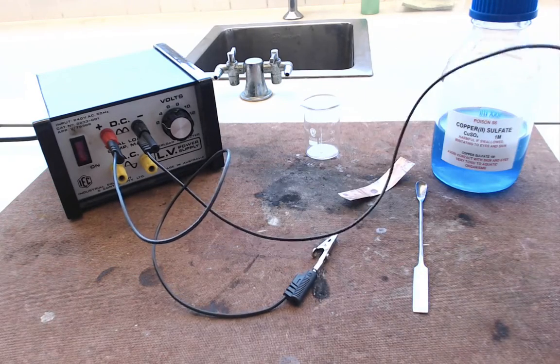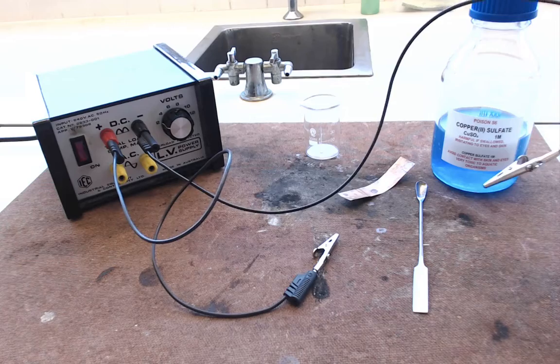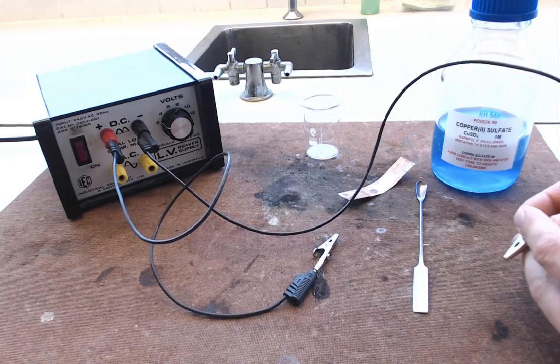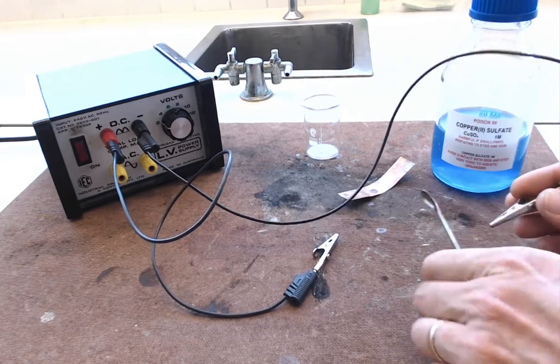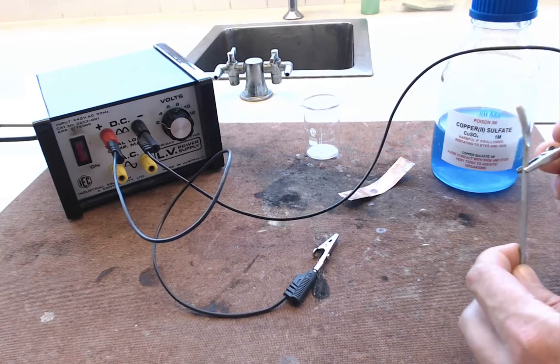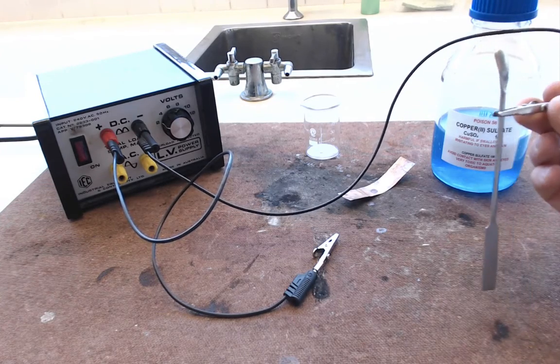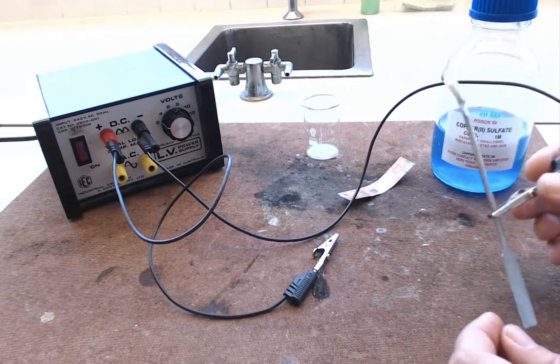So find your negative electrode. That's the one connected to the black terminal on your power pack. That is going to be connected to the object that you're going to try and plate with copper. So I would attach it to my spatula in this case.